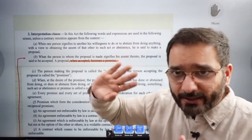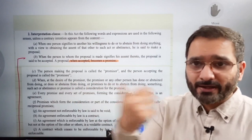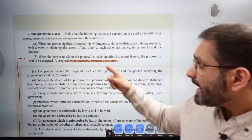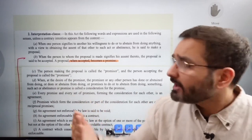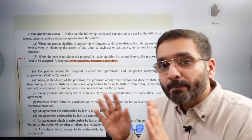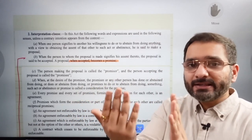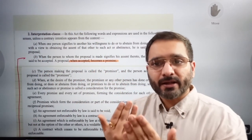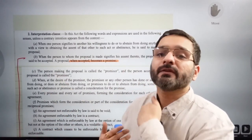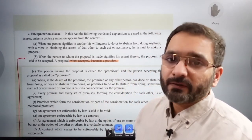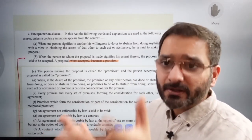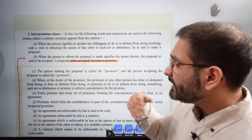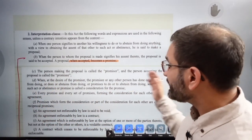So we had the proposal first. Now in the proposal, I say okay, great — I have accepted your proposal to buy my Fortuner. As soon as I accept your proposal, it becomes a promise. So legally: proposal plus acceptance equals promise. The person making the proposal is called the promisor, and the person accepting the proposal is called the promisee.